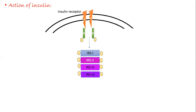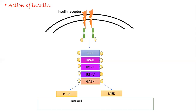IRS-4 is responsible for phosphorylation of GAB1. GAB1 then initiates two chains of reaction: one through activation of PI3K and the second through MEK. Both these substances are responsible for increasing glycogen, lipid, and protein synthesis. They decrease lipolysis and are responsible for cell growth and differentiation.